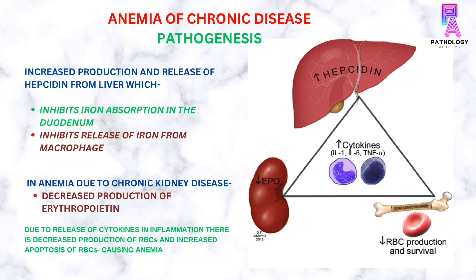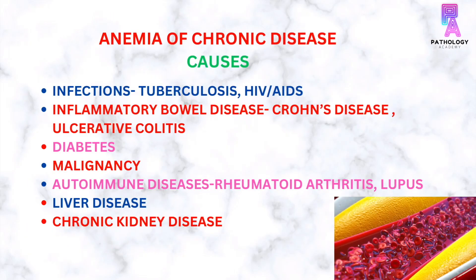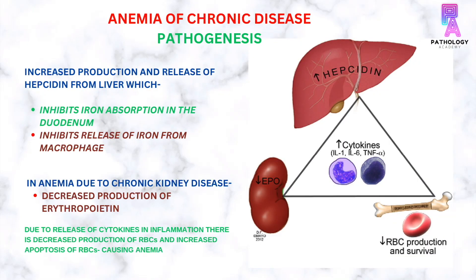The iron metabolism is altered due to an increase in hepcidin, which is synthesized in the liver and inhibits iron absorption from the duodenum. Also, hepcidin inhibits the release of iron from macrophages, leading to low serum iron.